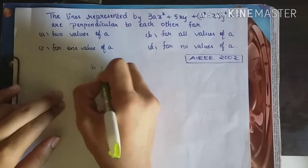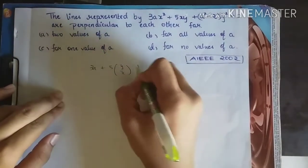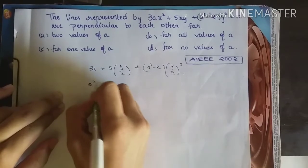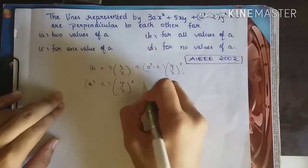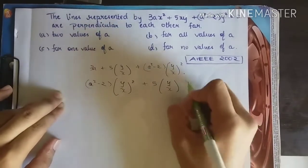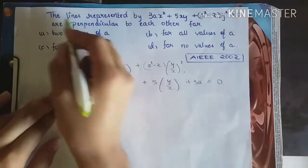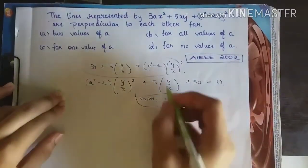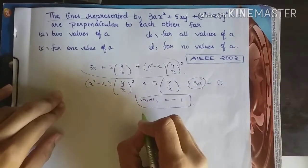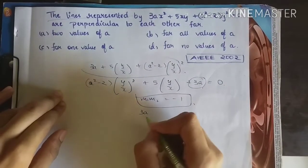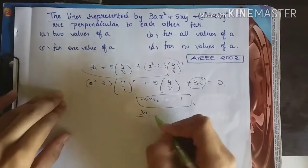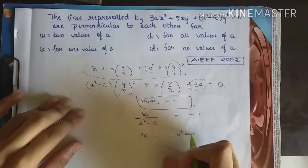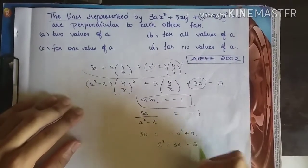Let's divide by x square. So we get 3a plus 5 times y by x plus a square minus 2 times y by x whole square. I will write it the other way. a square minus 2 times y by x whole square plus 5 times y by x plus 3a equal to 0. So what are they saying? The lines are perpendicular represented by this. That is m1m2 is equal to minus 1. That is all they are saying. We know, what is m1m2? That is c by a. That is 3a by, I am sorry, yeah, 3a by a square minus 2 is equal to minus 1. So 3a is equal to minus a square plus 2. So a square plus 3a minus 2 equal to 0.